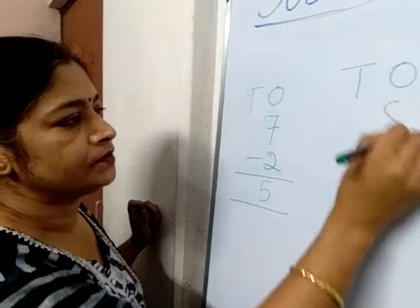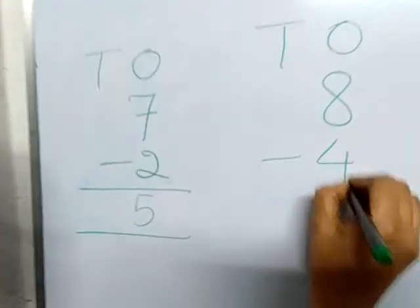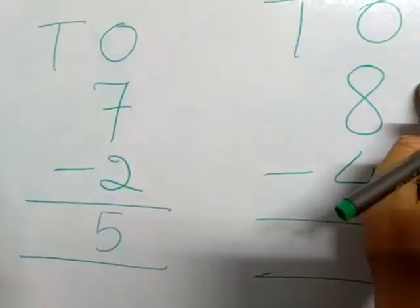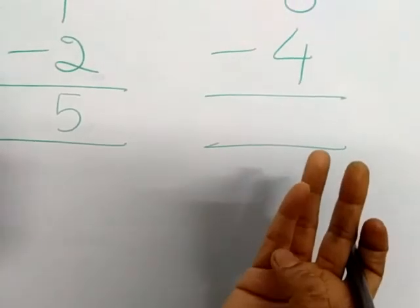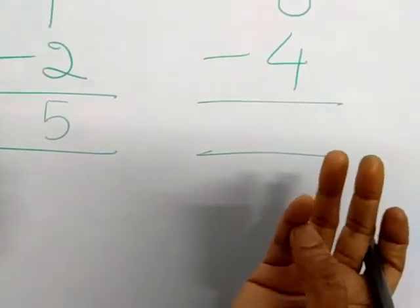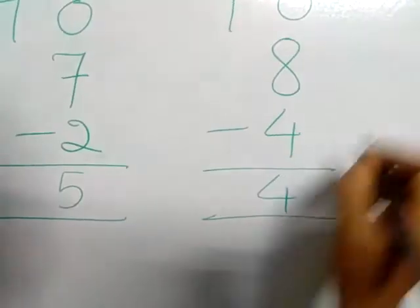Now, next. 8 minus 4. 8 is the big number, 4 is the small number. Start counting from 4. 5, 6, 7, 8. Count 1, 2, 3, 4.